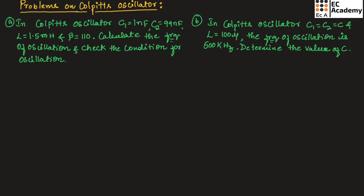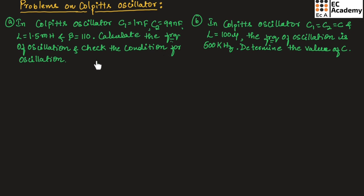Let us consider the first problem. In Colpitt's oscillator, C1 is 1 nanofarad, C2 is 99 nanofarad, L is 1.5 millihenry, and beta is given as 110. Here, we need to calculate the frequency of oscillation and check the condition for oscillation.